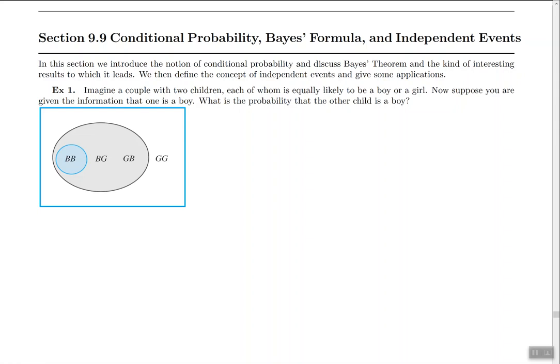So we'll start with example number one where we introduce the idea of conditional probability. Example one says imagine a couple with two children each of whom is equally likely to be a boy or a girl. So basically there's a 50-50 chance you can have a boy or a girl.